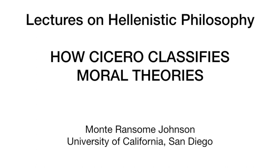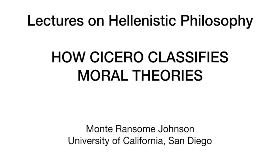Where does Cicero himself stand in this system? As an academic skeptic, he doesn't put forth his own theory about the highest good. But to the extent that he has one, it ends up being something like Polemo or Carneades' versions ultimately. As a skeptic, he says none of these people have proven their case with certainty, and nothing can be known with certainty, but the thing that seems most likely to him is that it's some combination of morality and non-moral goods.